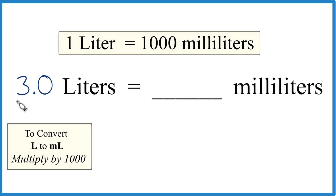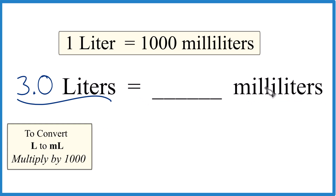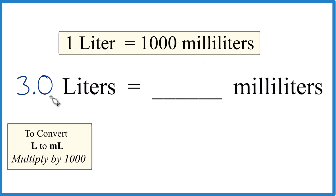Let's convert 3.0 liters to milliliters. What you need to know is that 1 liter is equal to 1,000 milliliters. So if 1 liter is 1,000 milliliters, 3 liters is going to be 3,000 milliliters.